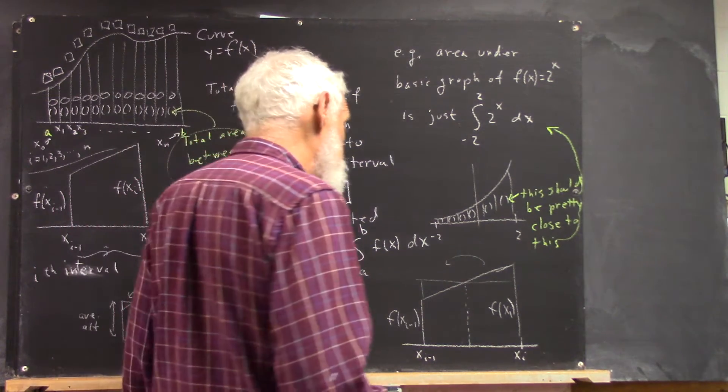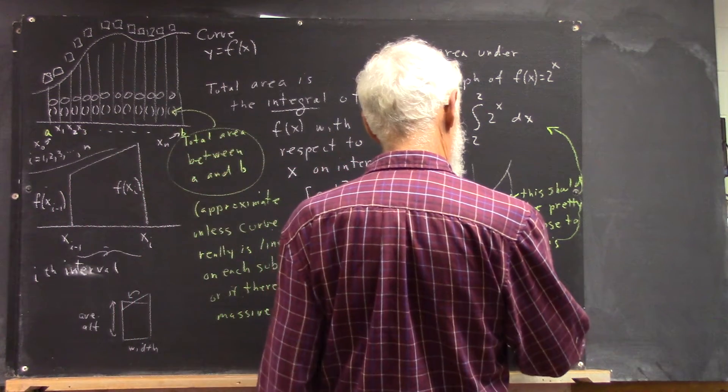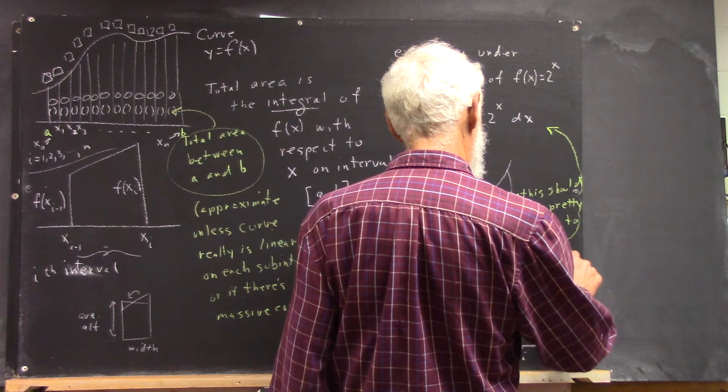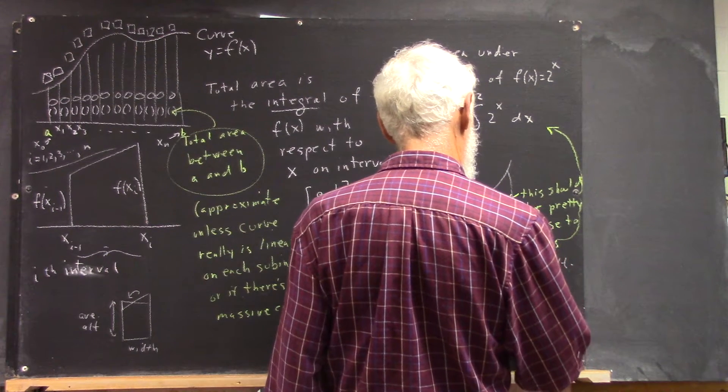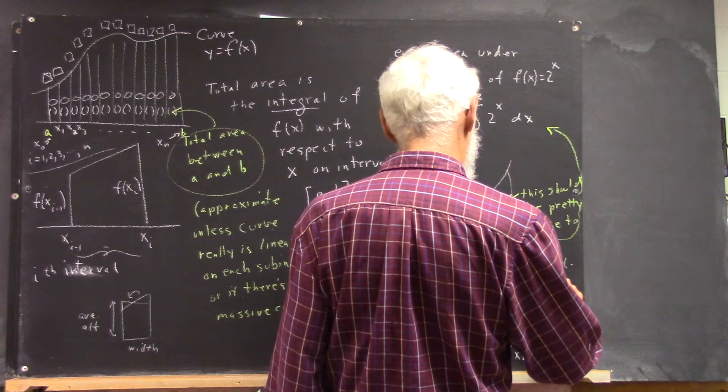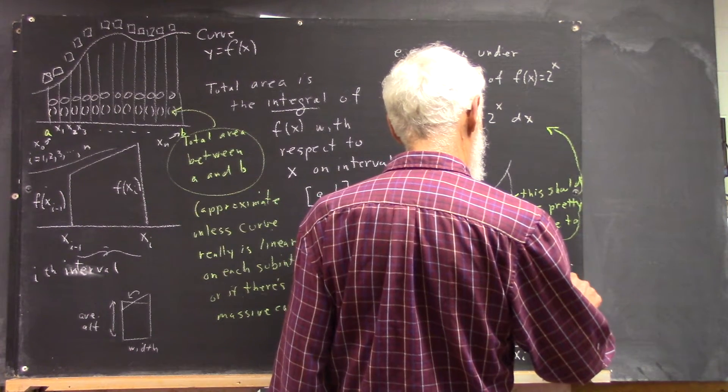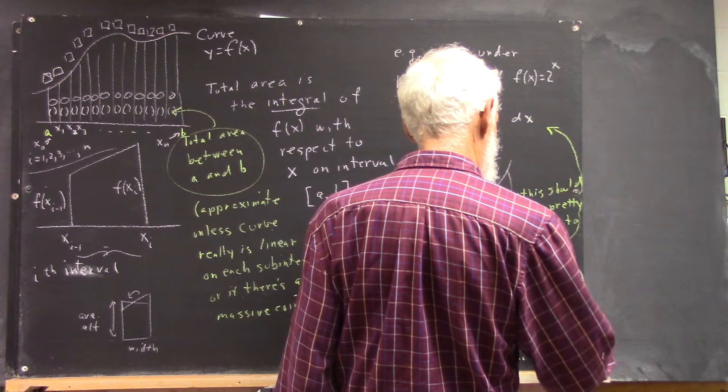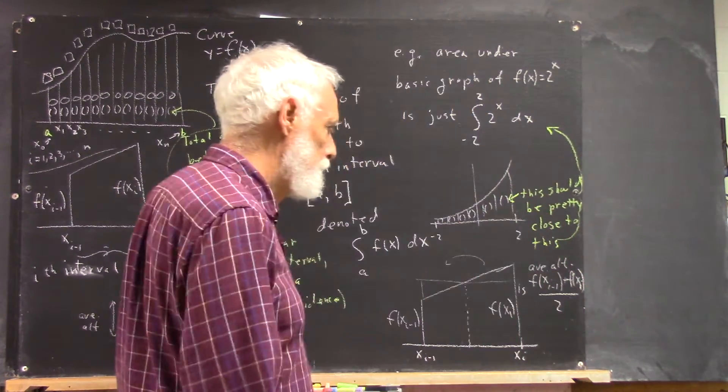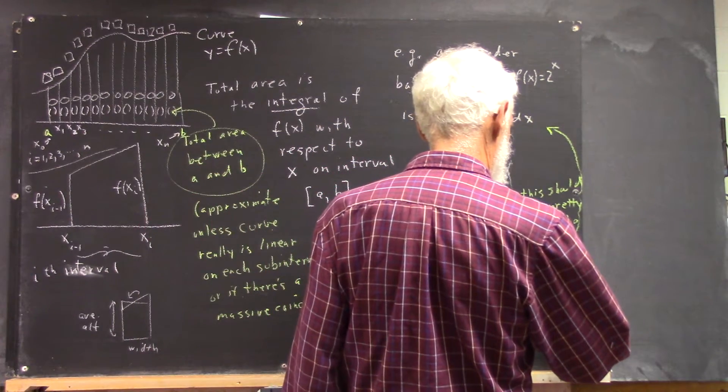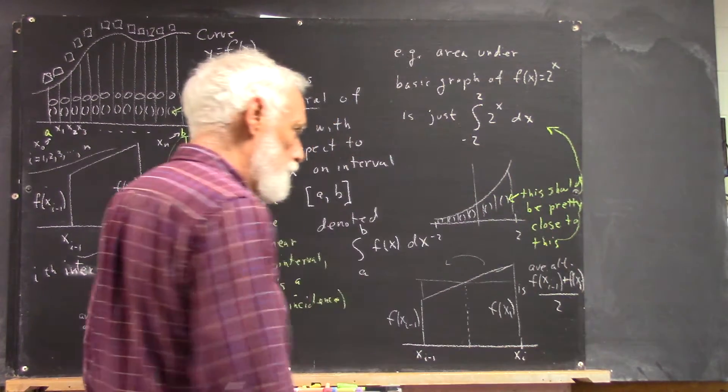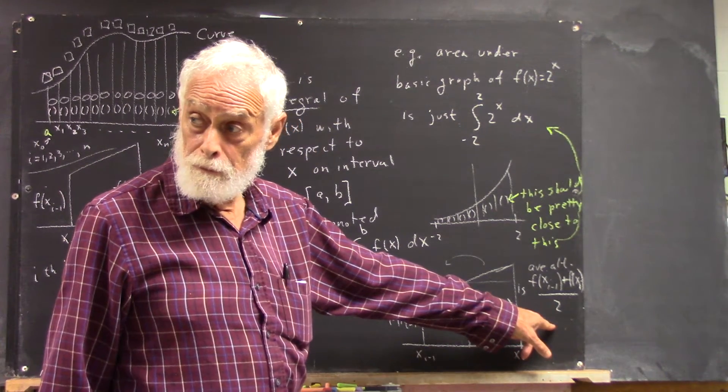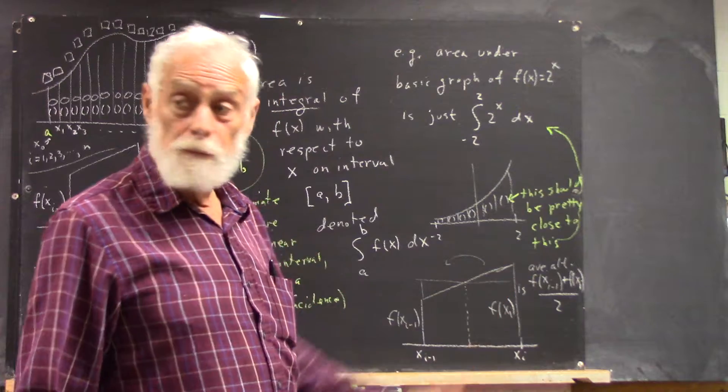Okay, so, well, the two numbers are f of xi minus one, and f of xi. That'll be written out again, but I'm just saying, add this to this and divide by two, right?